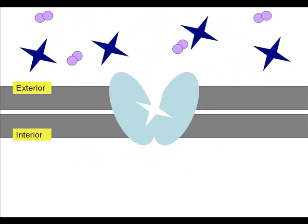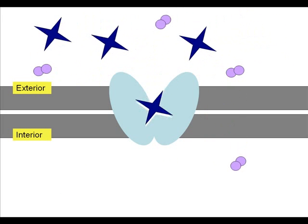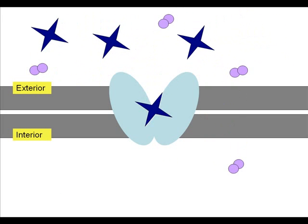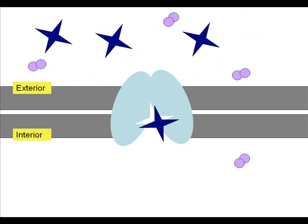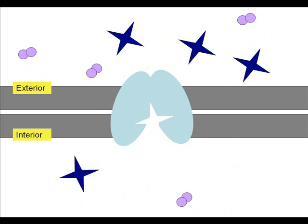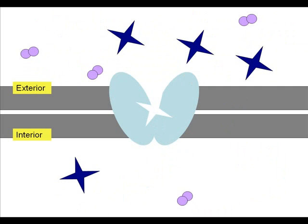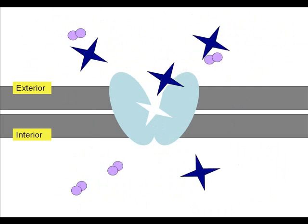When a glucose molecule happens to flow into the binding site, it binds to the carrier protein, which then changes conformation and releases the glucose on the other side of the membrane. This process will repeat until the molecules are equally distributed on either side of the membrane.